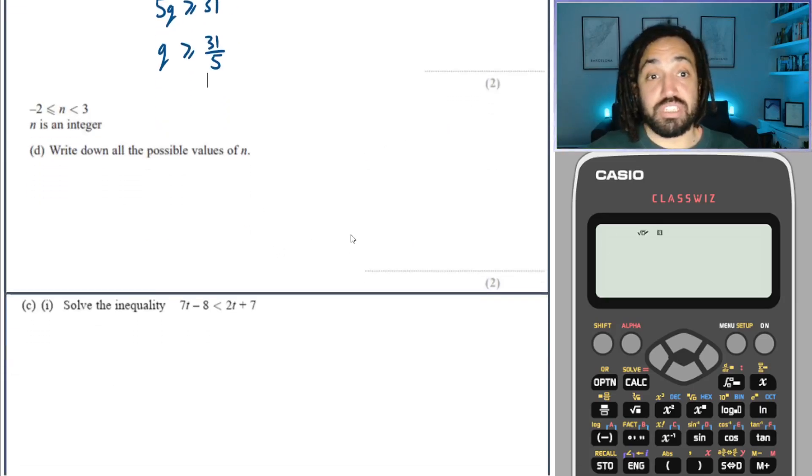Again another, this is an integer so minus 2 it can be, minus 1, 0, 1, 2, it can't be 3 so we stop there.